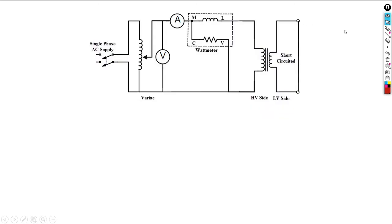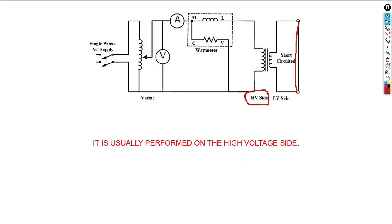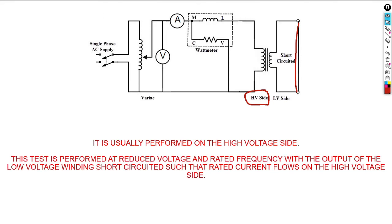For the short circuit test, we always perform it on the higher side of the transformer. This is because there are more coil turns on the high side and fewer on the low side, allowing more current to flow and reach our full-load current. The low side is simply short-circuited with a wire. This test is performed at reduced voltage and rated frequency so that rated circuit currents flow on the higher voltage side.